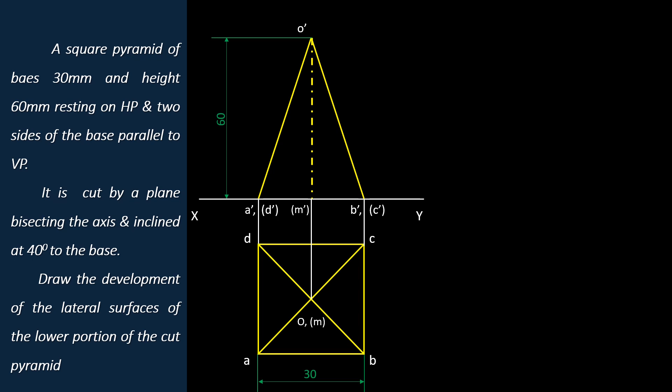Let's locate the section plane and section points. It is given that the section plane bisecting the axis, that means midway to the axis and is inclined 40 degrees to HP. It is possible to draw that section plane either towards left or towards right, because which is not mentioned in the problem. Draw the section plane with chain thin line with thick ends and arrowhead. And also mention the trace of the section plane.